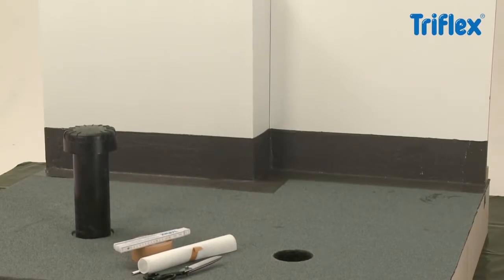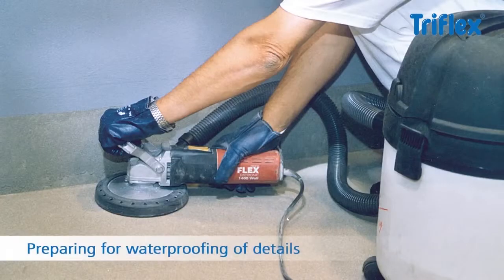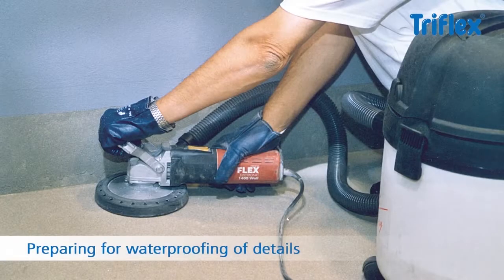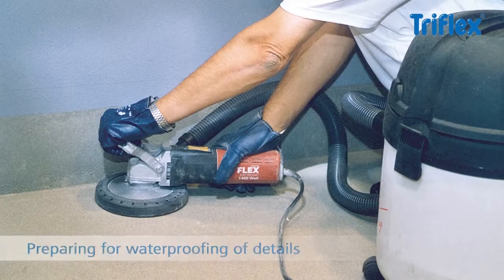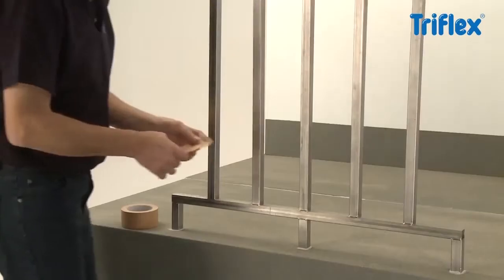Triflex Pro Detail is used to waterproof all flashings and details commonly found on flat roofs and balconies. Firstly, prepare the surfaces. All concrete surfaces should be sanded and all residual dust and loose particles removed prior to priming the substrate.